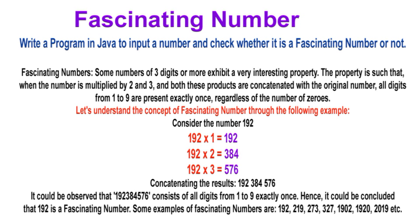Students, fascinating numbers. Some numbers of three digits or more exhibit a very interesting property. The property is such that when the number is multiplied by two and three, and both these products are concatenated with the original number, all digits from 1 to 9 are present exactly once, regardless of the number of zeros. Let's understand the concept of fascinating numbers through the following example.